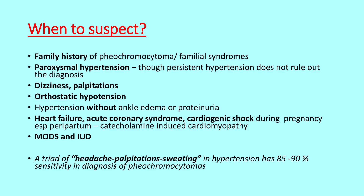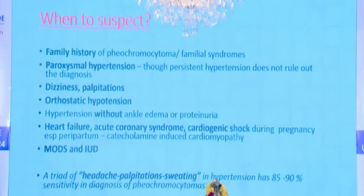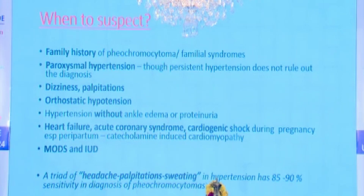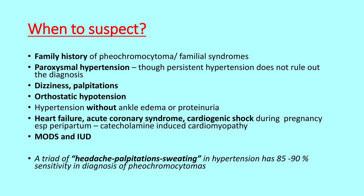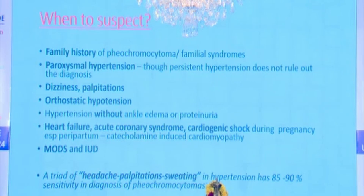When should we suspect pheochromocytoma? If there is family history of pheochromocytoma or familial syndromes, paroxysmal hypertension, dizziness, palpitation, orthostatic hypotension, hypertension without ankle edema — usually hypertension in pregnancy has edema, so if without ankle edema or proteinuria, suspect pheochromocytoma — heart failure, acute coronary syndrome, cardiogenic shock, multi-organ dysfunction, or IUD during pregnancy. A triad has been suggested: headache, palpitation, and sweating — remembered as TSH (tachycardia, headache, and sweating). A triad of TSH with hypertension gives a probability of pheochromocytoma of almost 85-90%.